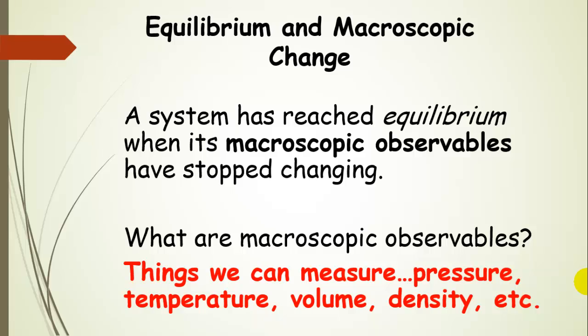This brings us to one of the central concepts in equilibrium: a system has reached equilibrium when its macroscopic observables have stopped changing. The types of things that we can measure — such as pressure, temperature, volume, density, and color — are all macroscopic observables. When they stop changing, the system has reached equilibrium.